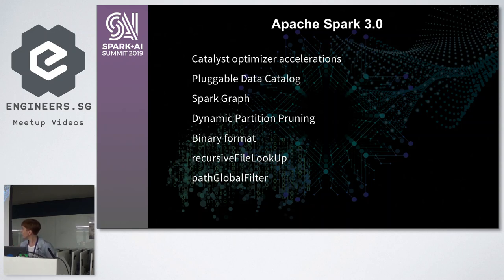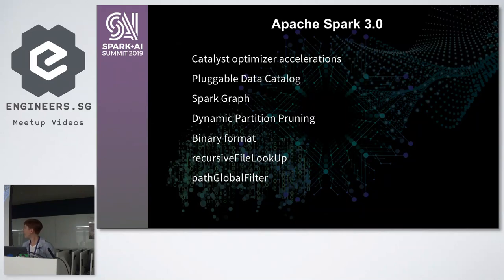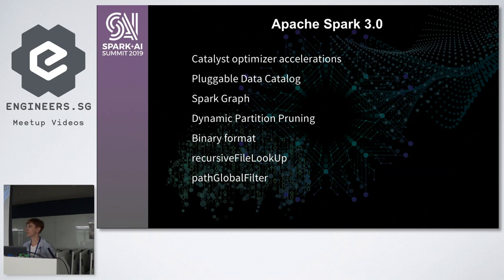Of course, the main thing is the Catalyst Optimizer — they improved a lot, but you may need to find a special video for that. Also interesting is pluggable data catalog, though I have no details. One cool thing is Spark Graph — a new model that works with graphs and allows you to use Cypher, a language from Neo4j database. One more thing is dynamic partitioning pruning, which we will cover today. Starting from this new version, we can use binary formats for data frames, and there are two features useful when reading files — we'll cover those too.